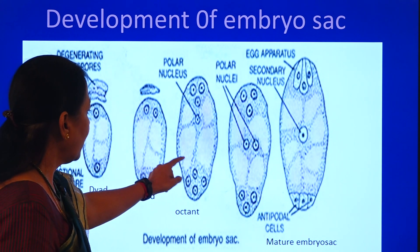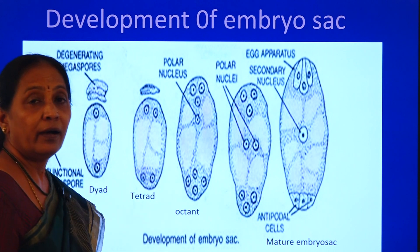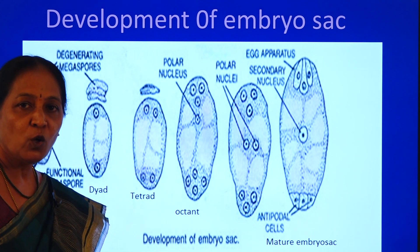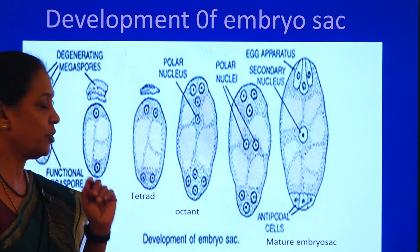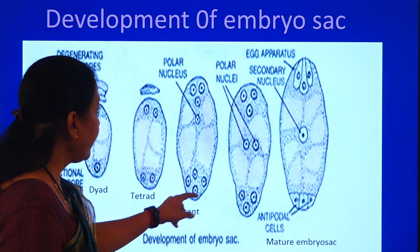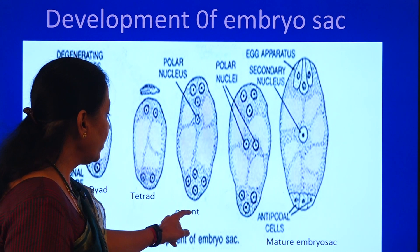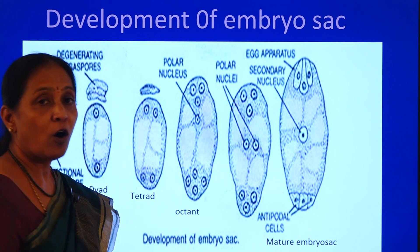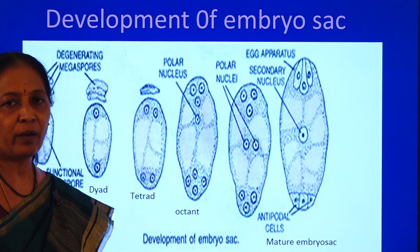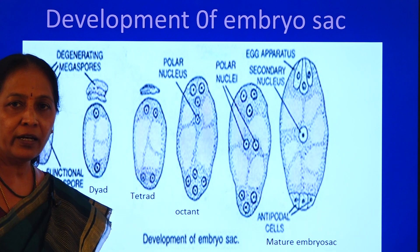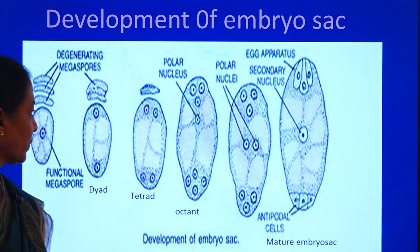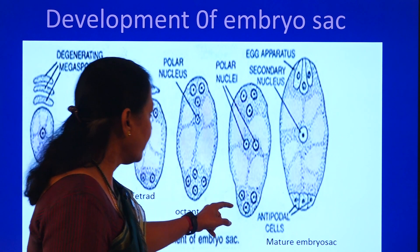After the tetrad stage, another mitotic division occurs, producing eight nuclei. This is considered the eight-nucleate stage, also called the octant stage. At the formation of the octant, the organization of the embryo sac begins.